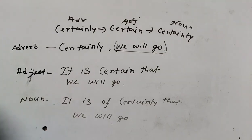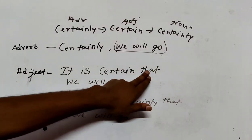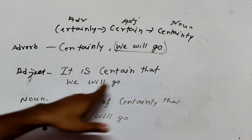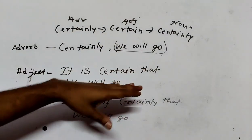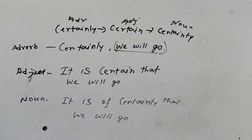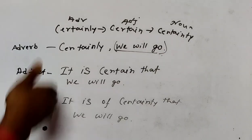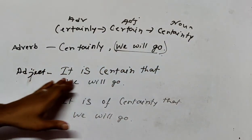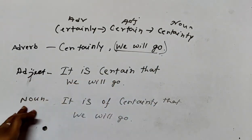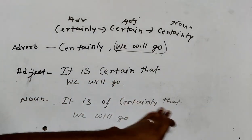In this complex sentence we have to put a subordinate clause. That subordinate clause joins the sentence, with 'that' acting as the subordinator. So: adverb — 'certainly we will go'; adjective — 'it is certain that we will go'; noun — 'it is of certainty that we will go.'